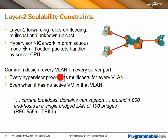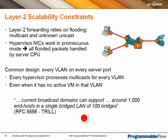This means every hypervisor gets multicasts for every single VLAN, even if the hypervisor has nothing active in that VLAN. Standards are realistic: current broadcast domains can support around 1,000 end hosts in an environment of around 100 bridges — straight from the TRILL RFC. And if you have every VLAN on every server port, because of the amount of broadcast traffic, you're actually talking about only 1,000 VMs. We definitely need some scalability tools.